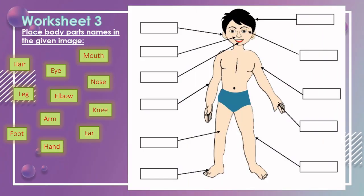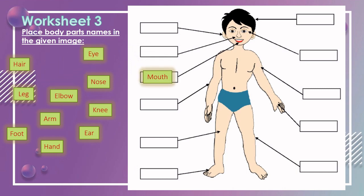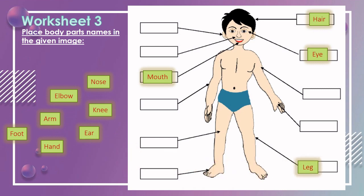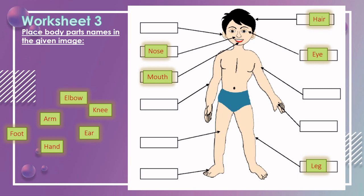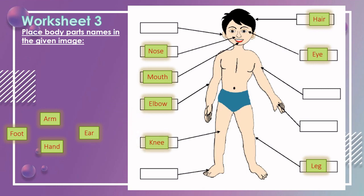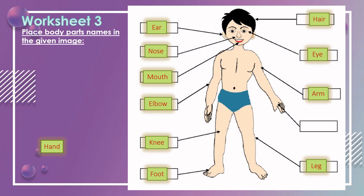Moving to worksheet three. Place body parts names in the given image. Mouth. Eye. Mouth. Leg. Nose. Elbow. Knee. Arm. Foot, ear, and lastly hand.